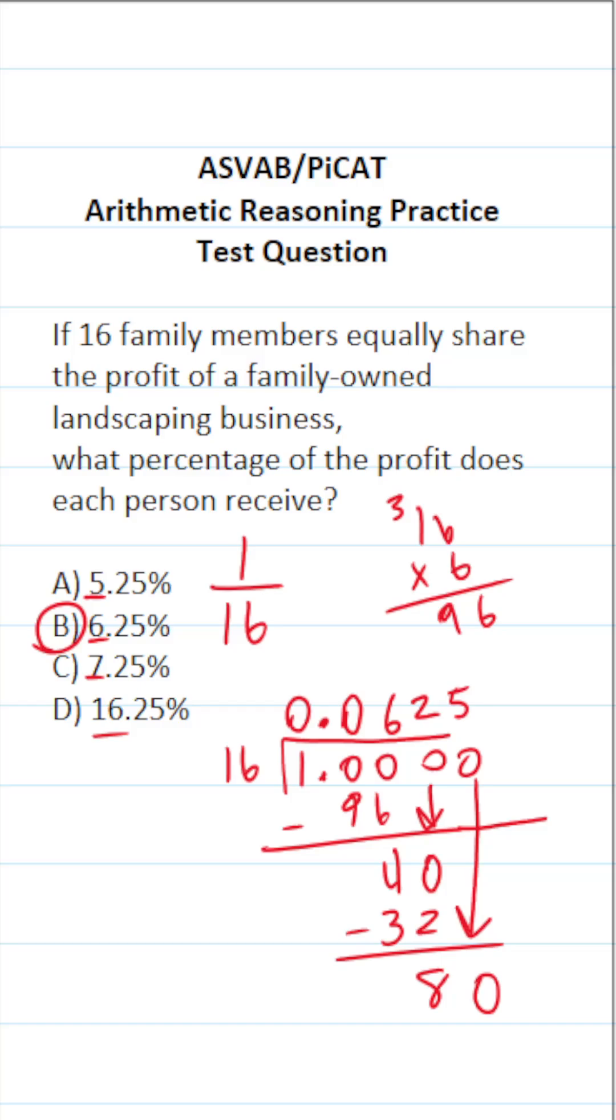Well, you know it's going to be 5 times. 16 times 5 is exactly 80 with no remainder. This is 0.0625, which is the same thing as 6.25%. So this one is B.